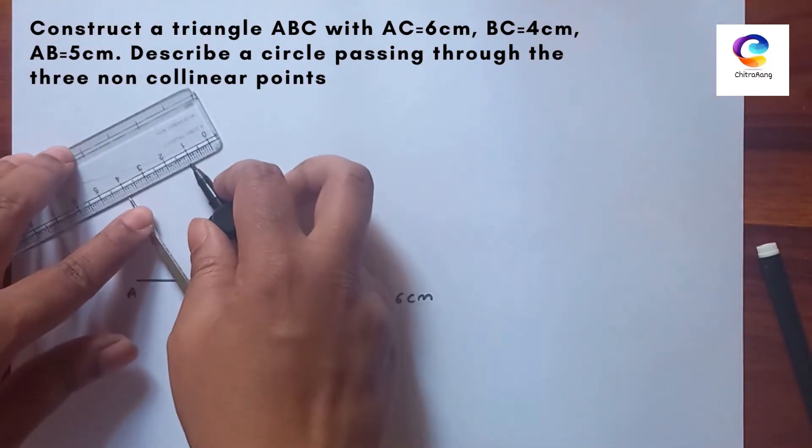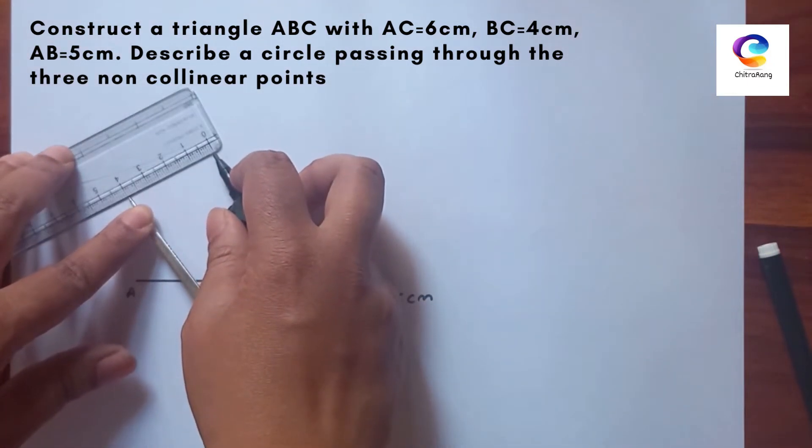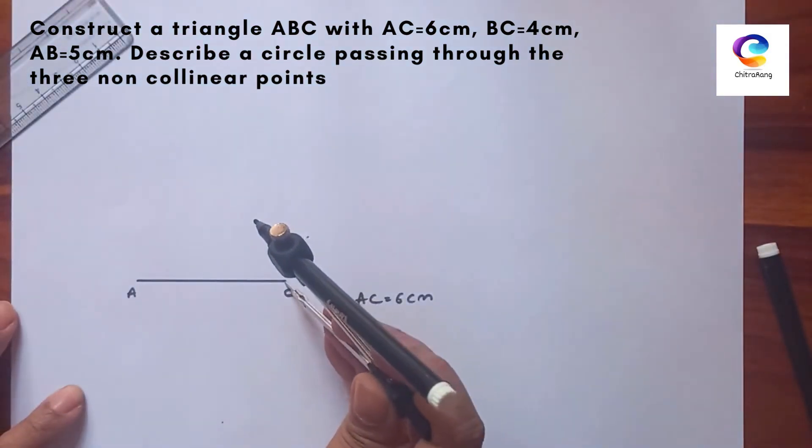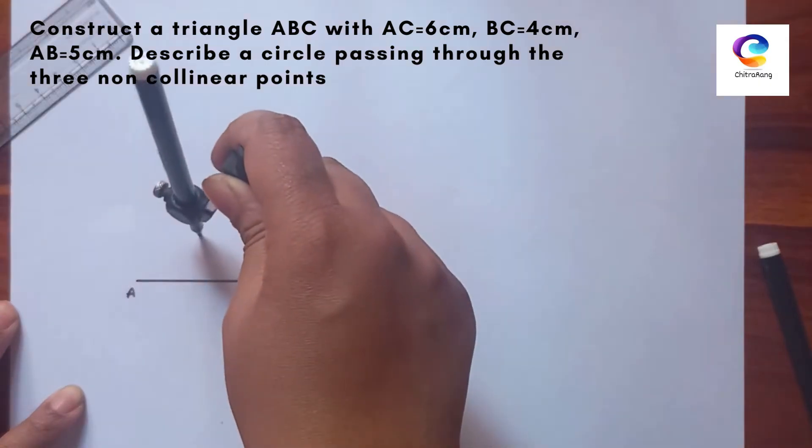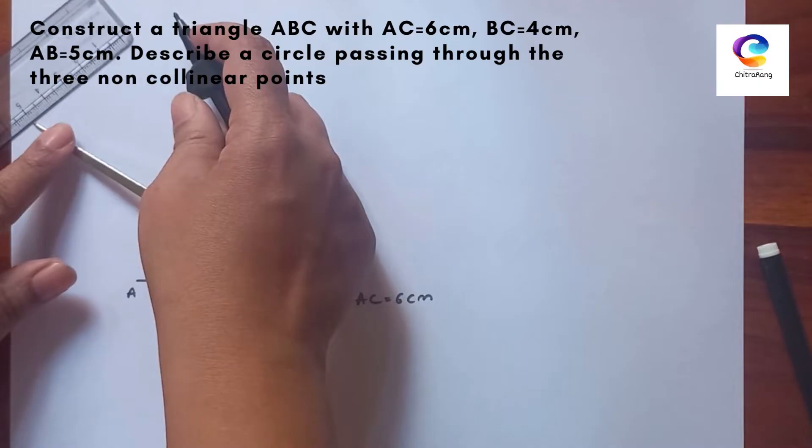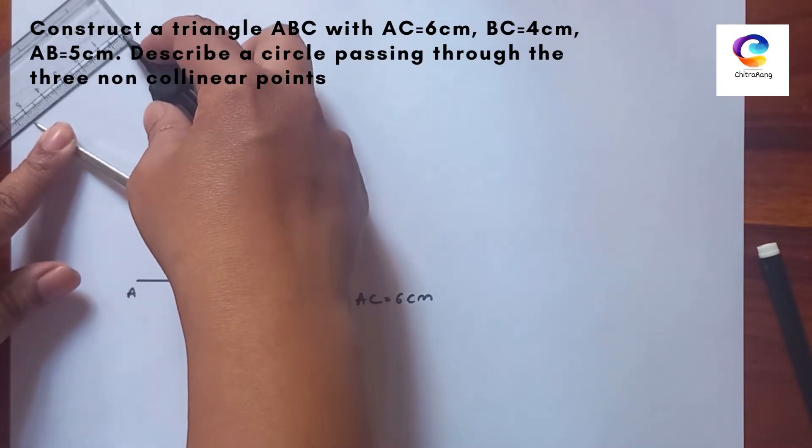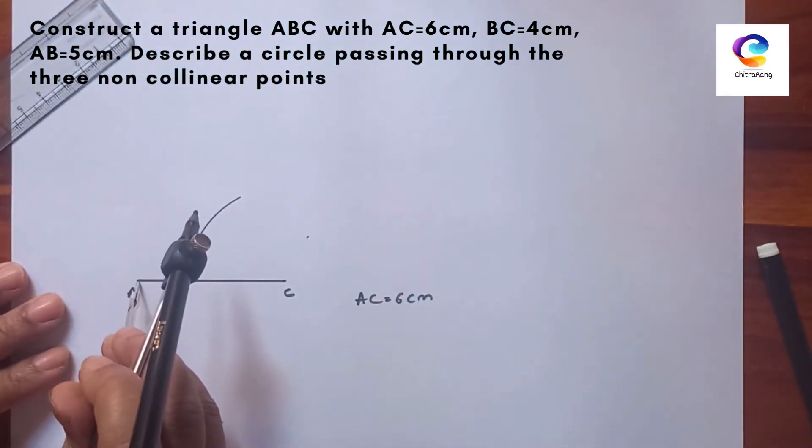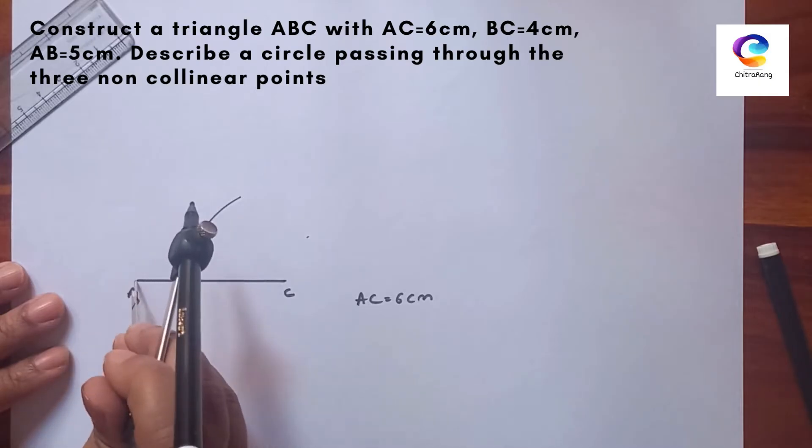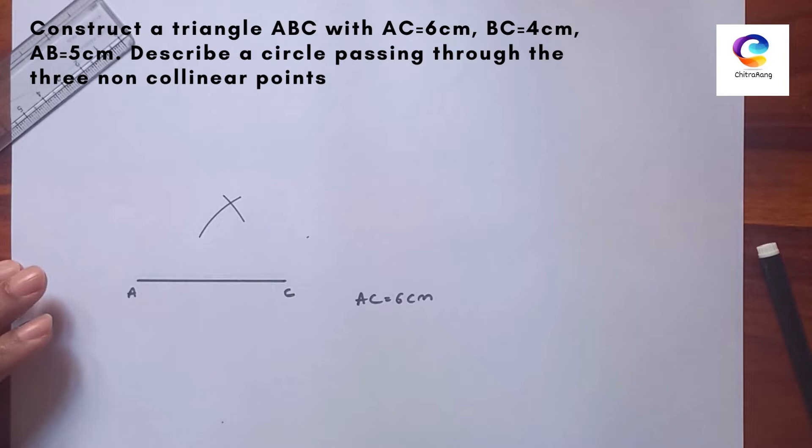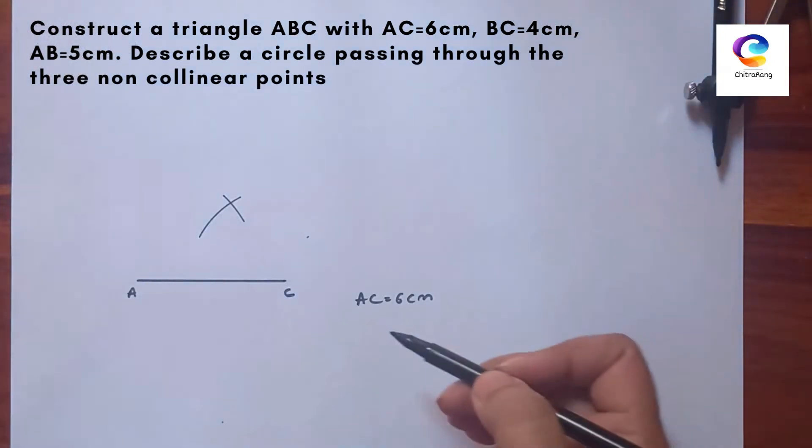We will take 4 in the compass and draw an arc from point C. Then, next is 5. We will take 5 cm and draw an arc from point A which intersects the previous arc, and join this.